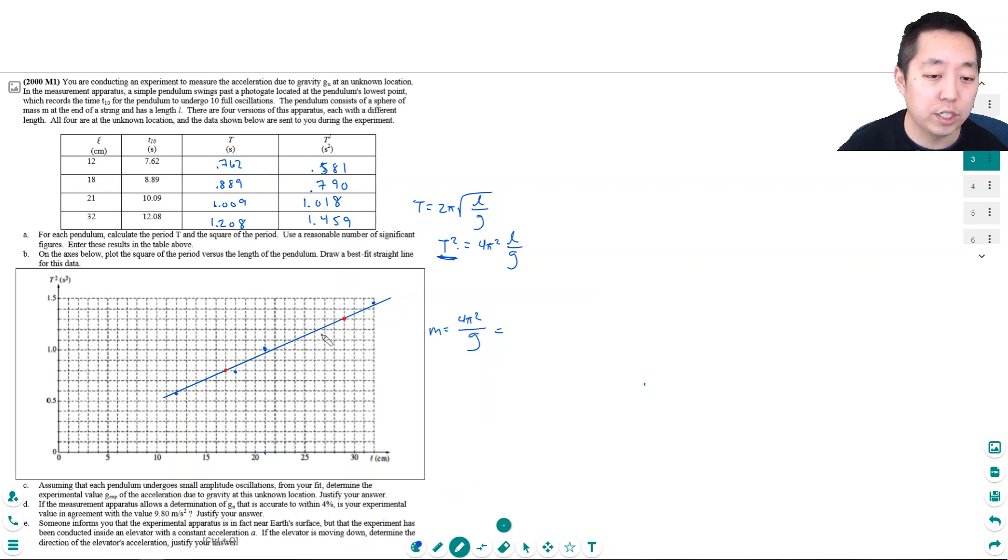I want the change in y over the change in x. The y goes up 1, 2, 3, 4, 5—that's 5 seconds squared. Divided by the change in x: this is at 17 cm and this is at 29 cm, so 29 minus 17. These are in centimeters and I want meters, so divided by 100: 0.29 meters minus 0.17 meters. You have to check the units, otherwise it won't be in seconds squared.